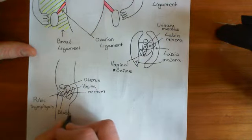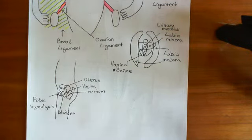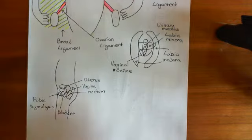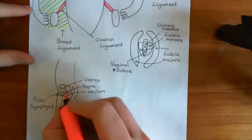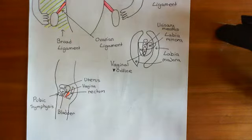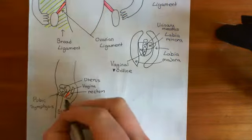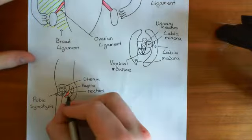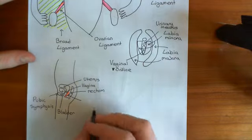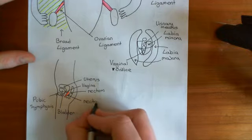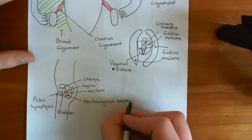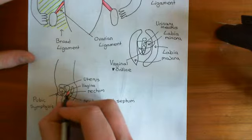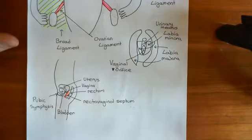From this angle we can understand where the rectovaginal septum is going to be — it's in between the vagina and the rectum. Basically, you have a thick septum of connective tissue that sits between the rectum and the vagina. The equivalent in males sits between the rectum and the prostate gland. This piece of connective tissue is known as the rectovaginal septum, and you can end up with endometrial tissue existing within it — that's the third most common place for endometriosis to occur.